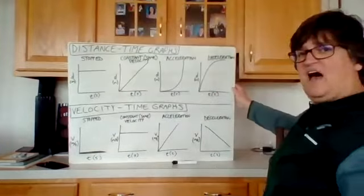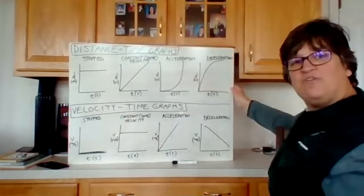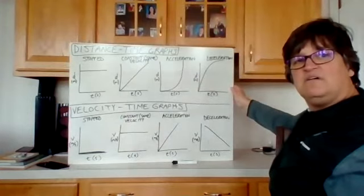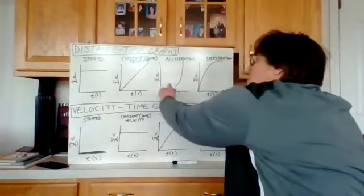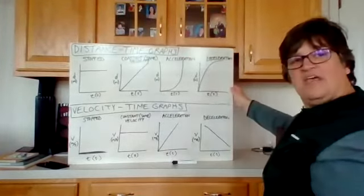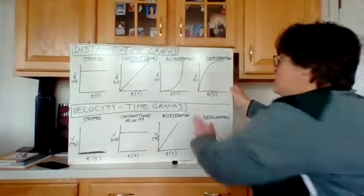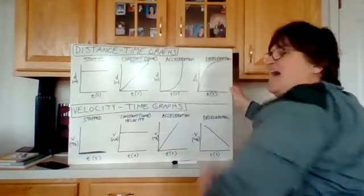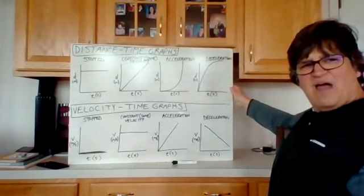Now, you will notice on this side over here that both of those two graphs represent some kind of acceleration. In this one, you are speeding up. It looks like an exponential growth graph. This one, you are slowing down. Do you notice that these look like parabolas?